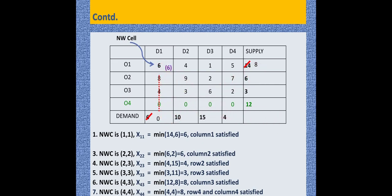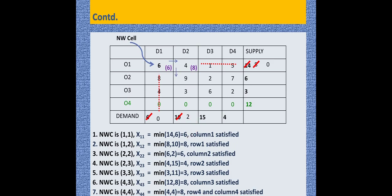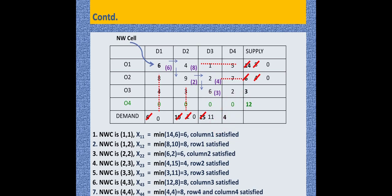The NWCR cell is identified. Comparing 6 and 14, minimum is 6, which is allocated and that row is struck off. Remaining demand: 14 minus 6 equals 8. Next NWCR cell: comparing 10 and 8, minimum is 8, allocated and that row is struck off; 10 minus 8 leaves 2. Next: comparing 2 and 6, minimum is 2, allocated and struck off; remaining demand is 4. Next: comparing 15 and 4, minimum is 4, allocated and that row is struck off; 15 minus 4 leaves 11. Next: comparing 11 and 3, minimum is 3, which is allocated; remaining is 11 minus 3 equals 8.